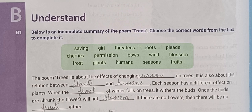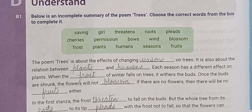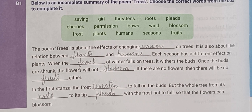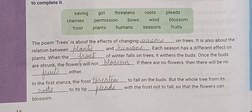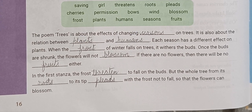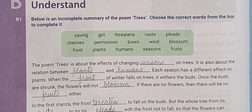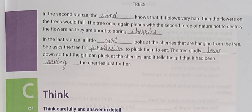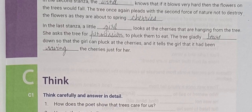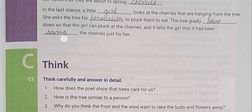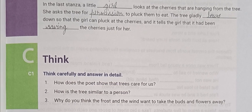In this part you have to choose from the given words which is suitable for the fill in the blanks according to the sentence. The words are: seasons, plants, humans, frost, blossom, fruits, threaten, roots, please, wind, cherry, permission, bows, and saving. You can also search the summary of this chapter or any other chapter on YouTube: 'Trees summary by Rani Sharma.'